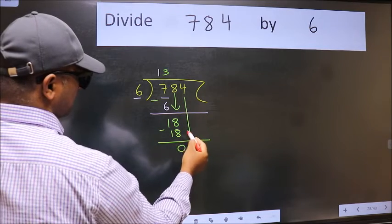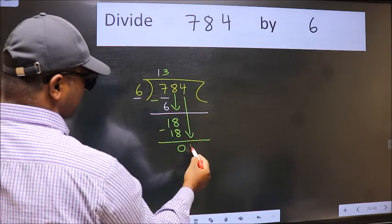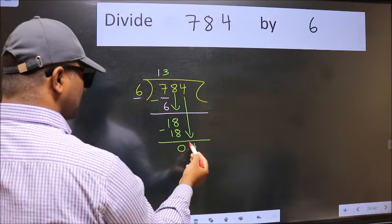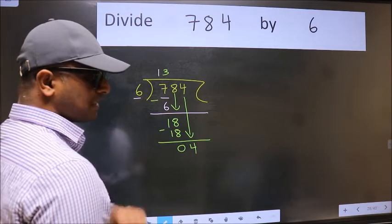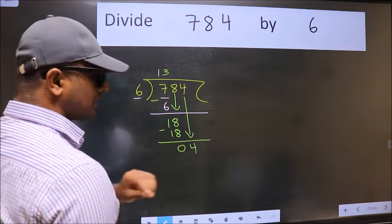After this, bring down the beside number. So 4 down. After this step, the mistake happens. And the mistake is this.